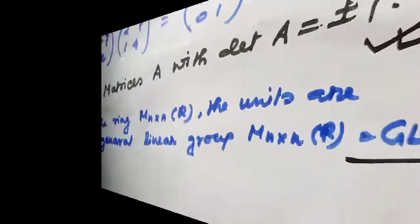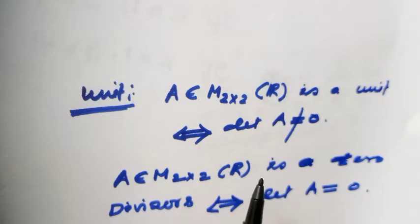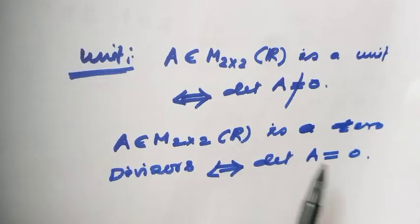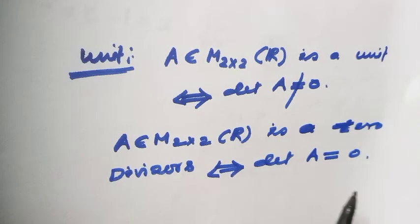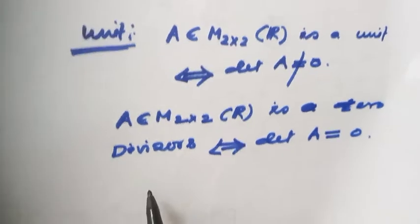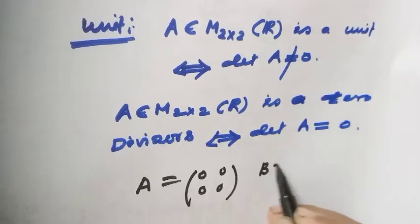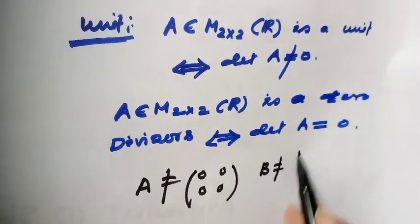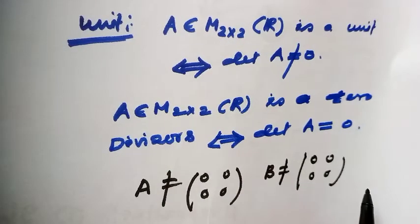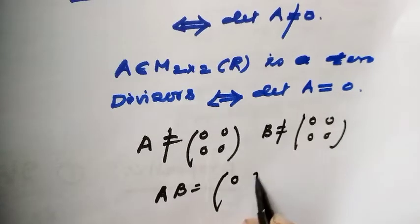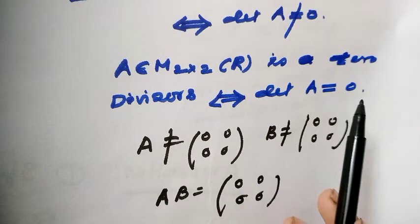Now here is a nice observation. Consider 2×2 matrices with real entries. The set of units consists of those matrices whose determinant is non-zero, and the zero divisors are those matrices whose determinant is equal to zero. To see the proof, consider a non-zero matrix A and a non-zero matrix B such that their product A·B = 0. This is the definition of zero divisor, and I will prove this by contradiction.